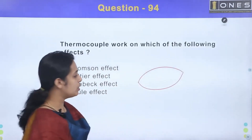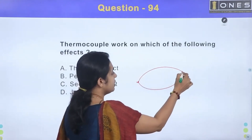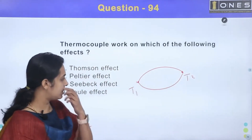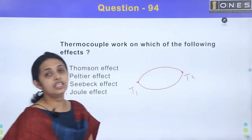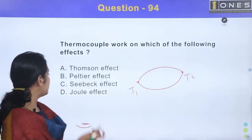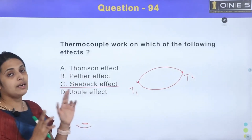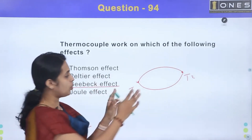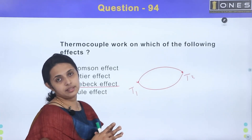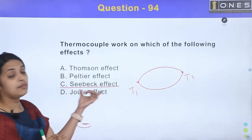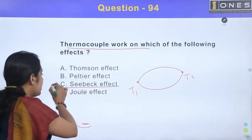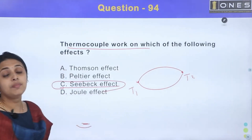We use two dissimilar metals. We have two junctions combined — T1 and T2. We have EMF induced. We call it the Seebeck effect. Two dissimilar metals are joined to form two junctions, and if the two junctions are maintained at different temperatures, the EMF will be induced in the system. That is why we have the Seebeck effect. So, a thermocouple works on this principle. Option C is the Seebeck effect.